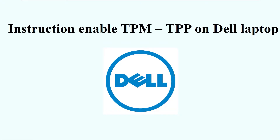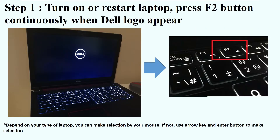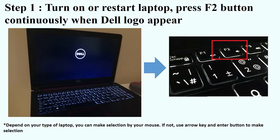This is the instruction to enable TPM or TPP on a Dell laptop. Step 1: turn on or restart your laptop and press the F2 button continuously when the Dell logo appears. Depending on your type of laptop, you can make selections by mouse or, if not, use the arrow keys and Enter button.